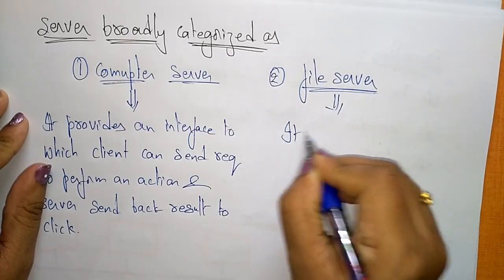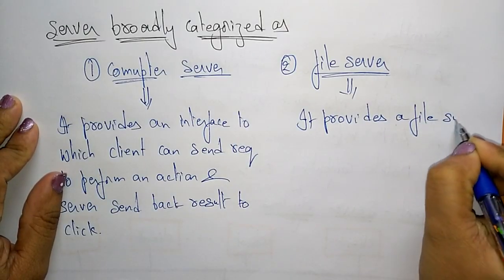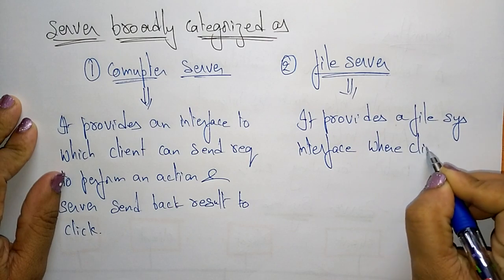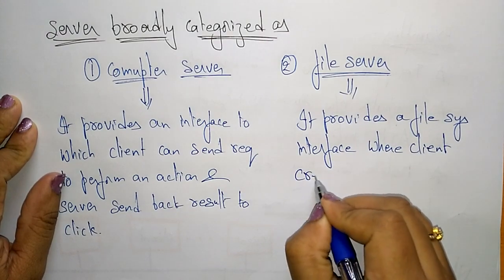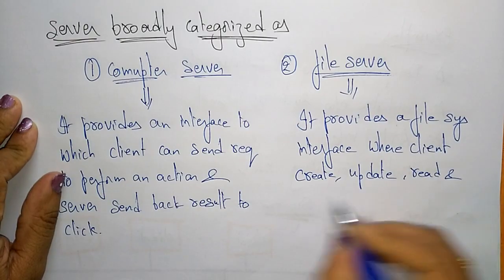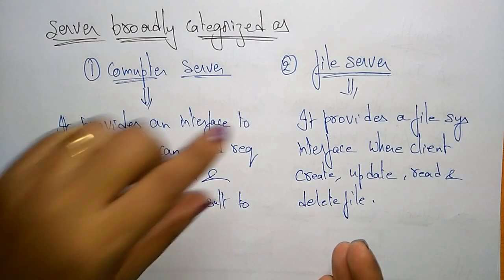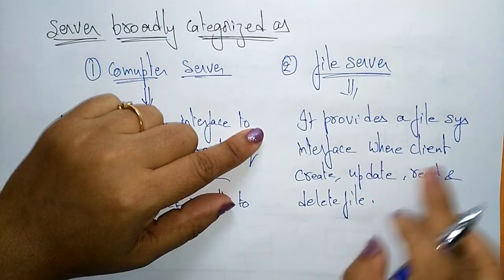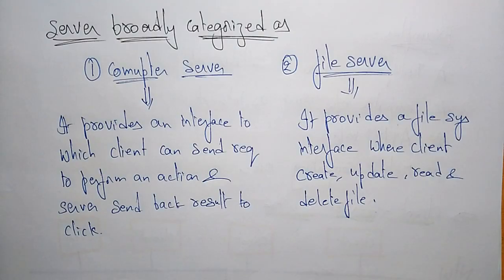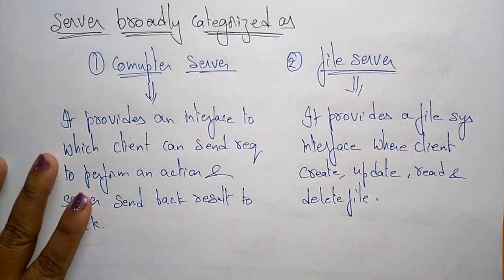A file server provides a file system interface where clients can create, update, read, and delete the files present on the server. If the server is acting as a file server, it provides a file system interface where the client can create, update, read, and delete files. So the server can be broadly categorized as a computer server or a file server.